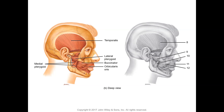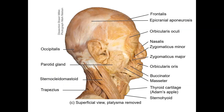All of these muscles — orbicularis oris, buccinator, medial and lateral pterygoid, masseter, and temporalis — are used while eating because you need to elevate and depress the jaw, produce lateral movement, hold food in the mouth, and churn it. In the labeling on the right side: number eight is temporalis, number nine is lateral pterygoid, number ten is medial pterygoid, number eleven is orbicularis oris, and number twelve is buccinator.